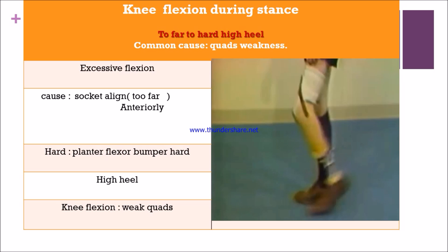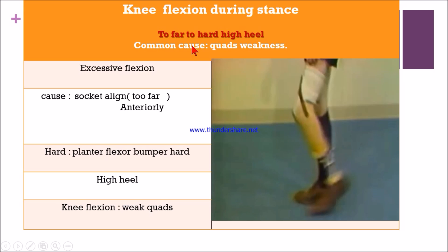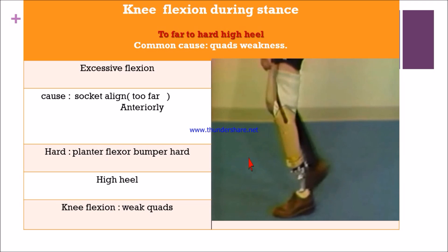The common cause for excessive knee flexion is quadriceps weakness. Remember the mnemonic 'too far, too hard, high heel': too far means socket is aligned too far anteriorly, too hard means the plantar flexion bumper is hard, and high heel means the heel is too high.